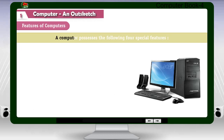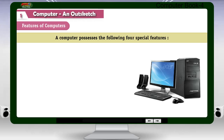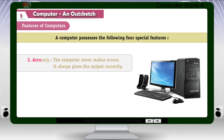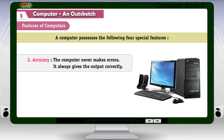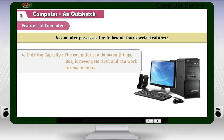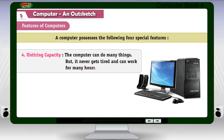A computer possesses the following four special features: 1. Speed — the computer works very fast and can do a number of calculations in a second. 2. Accuracy — the computer never makes errors and always gives the output correctly. 3. Storage Capacity/Memory Power — the computer can remember and store a lot of things. 4. Untiring Capacity — the computer can do many things but never gets tired and can work for many hours.